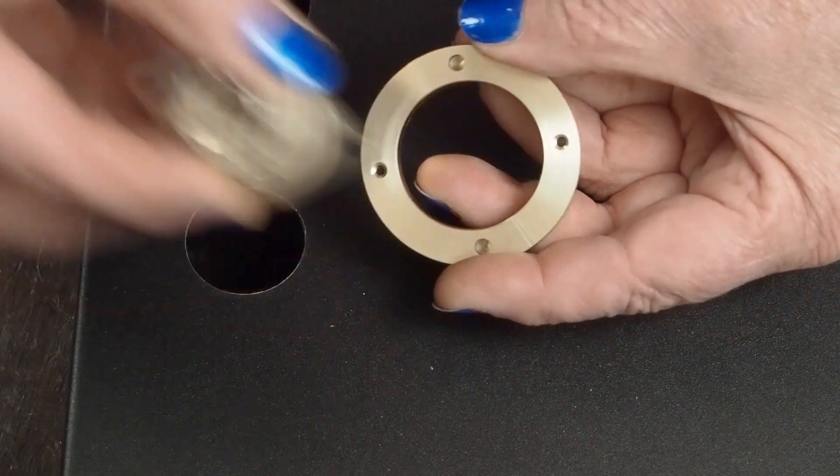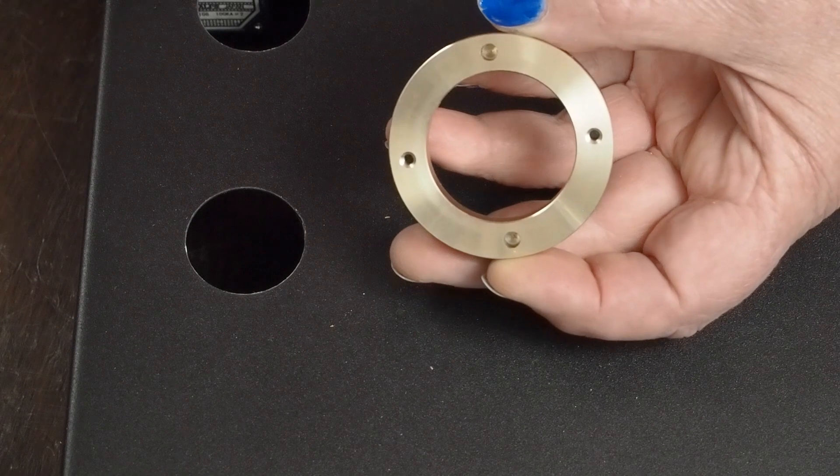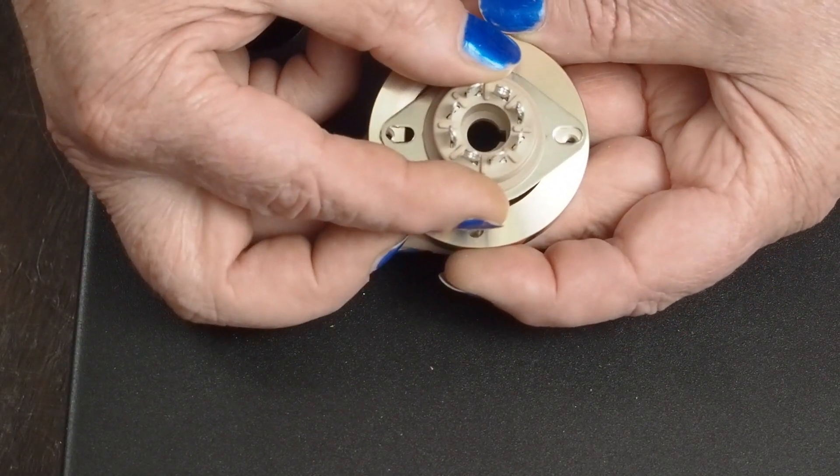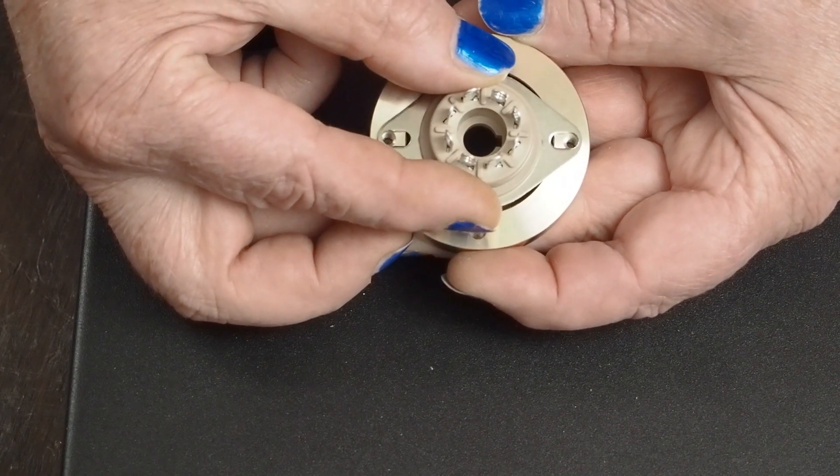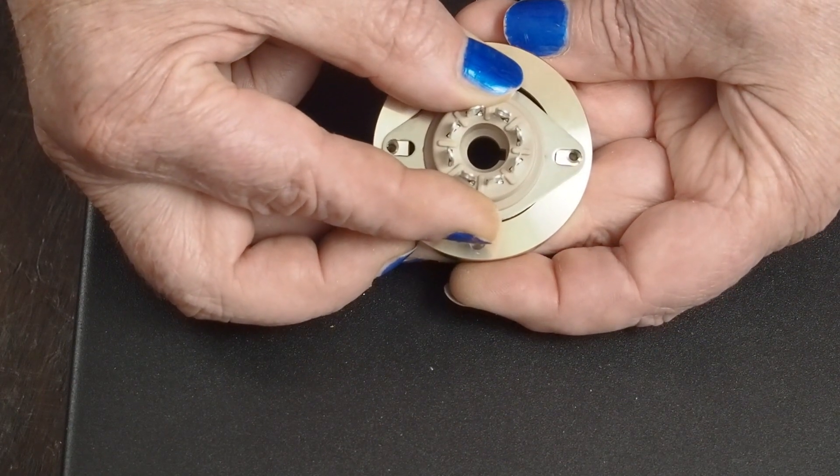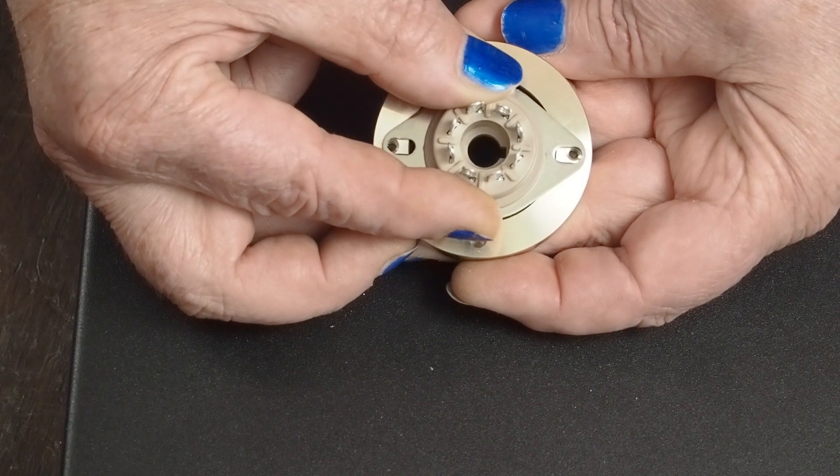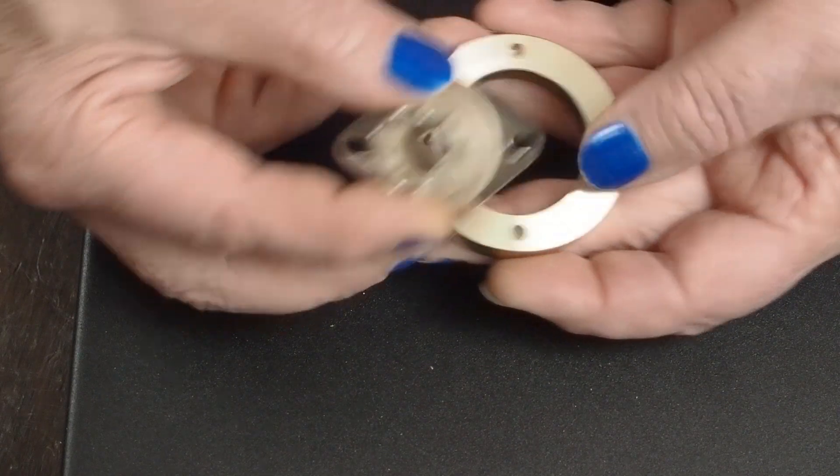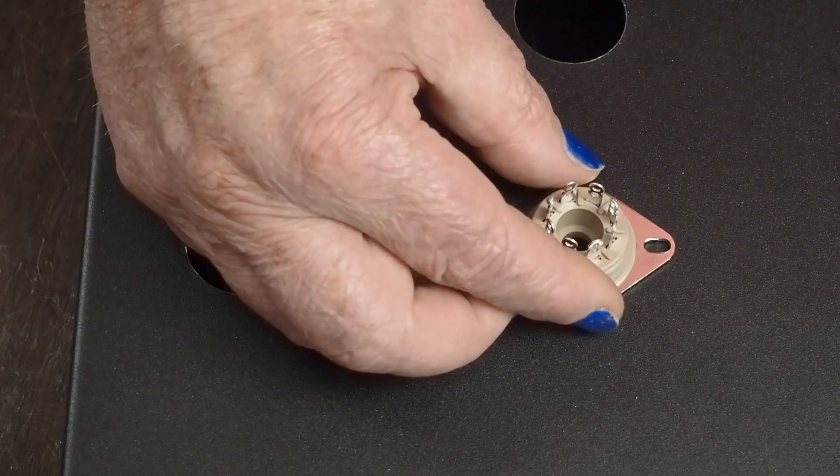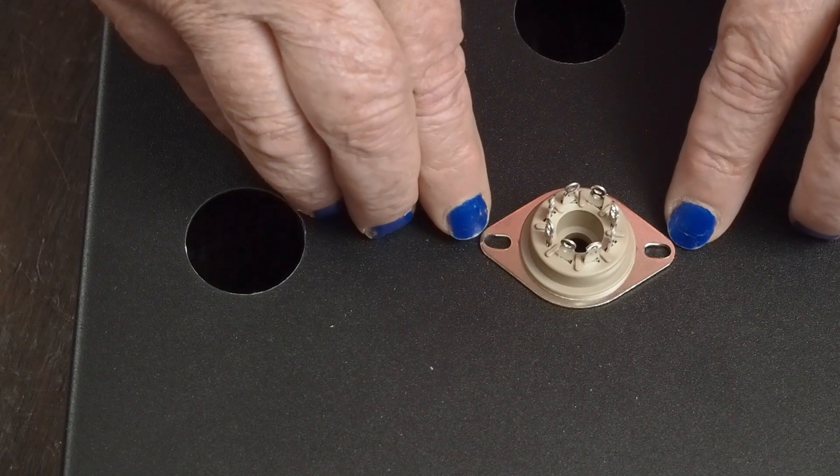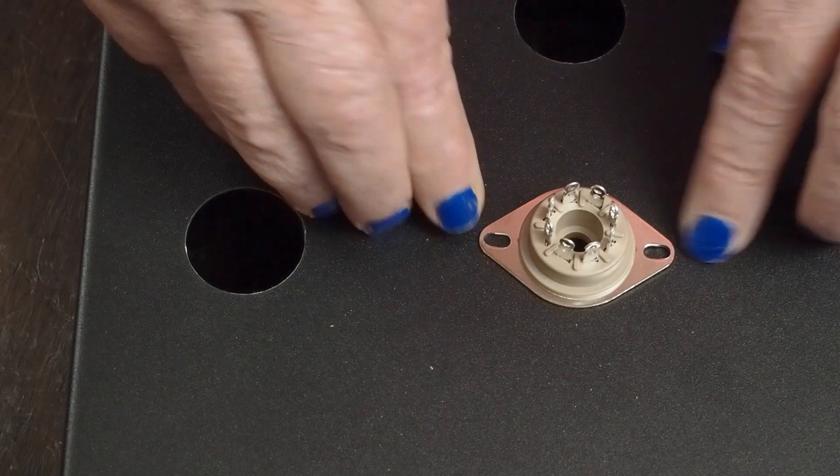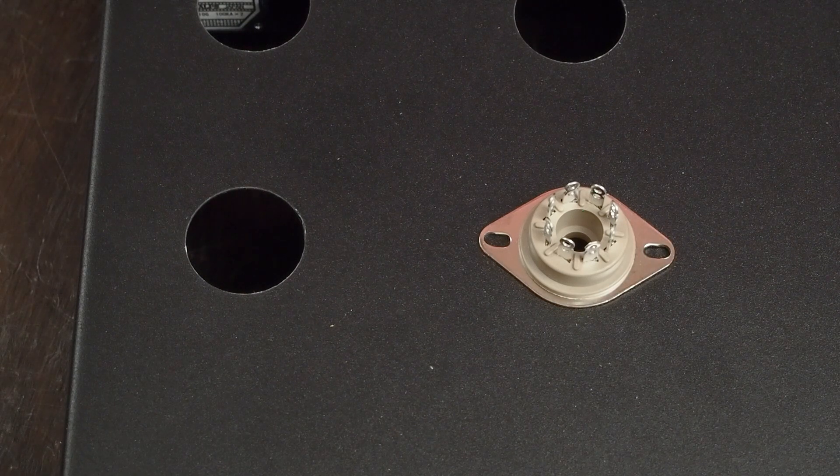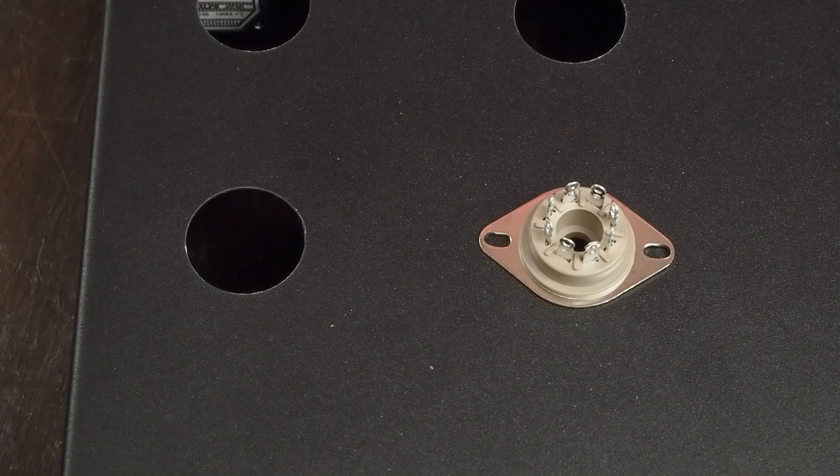So what you have to do is get a Dremel tool and slot the holes out on the ends. I usually slot until the screws will just go in, and then I can use that as a reference on where to drill the hole in the chassis. Then again, put it on the underside, mark those centers.